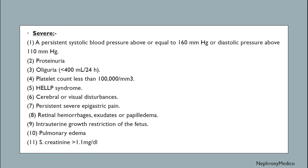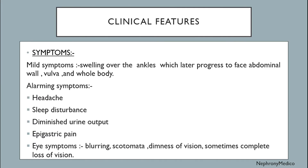Features of severe preeclampsia include: proteinuria, oliguria less than 400 milliliters per 24 hours, platelet count less than 1 lakh per millimeter cube, HELLP syndrome, cerebral or visual disturbances, persistent severe epigastric pain, retinal hemorrhages, exudates or papilledema, intrauterine growth restriction, pulmonary edema, and serum creatinine more than 1.1 milligrams per deciliter.